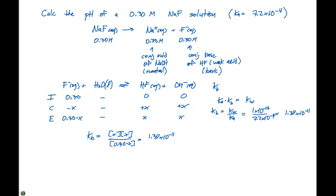This is a very small value, which is great because now we can use the approximation. That's going to give us X squared divided by 0.30 equals 1.39 times 10 to the -11.